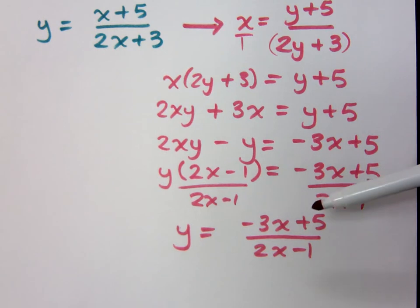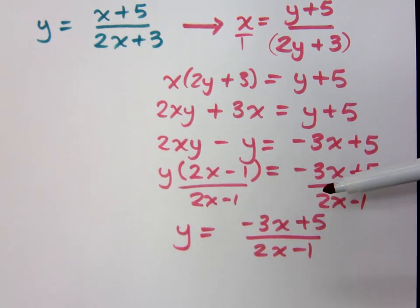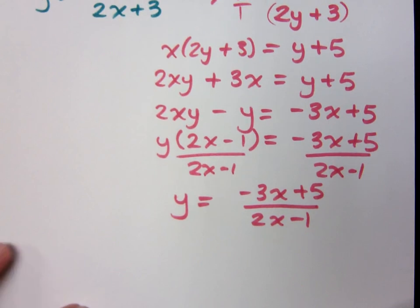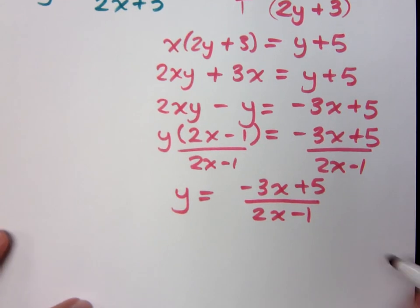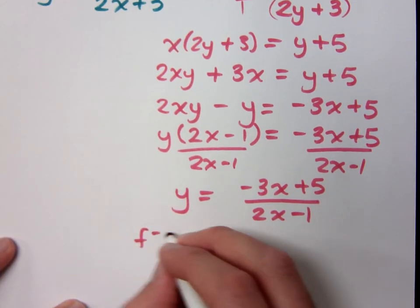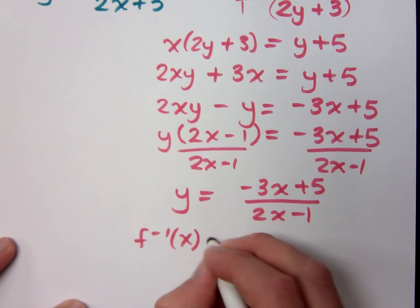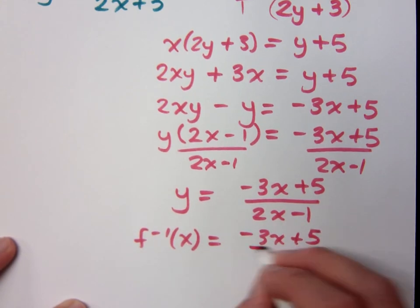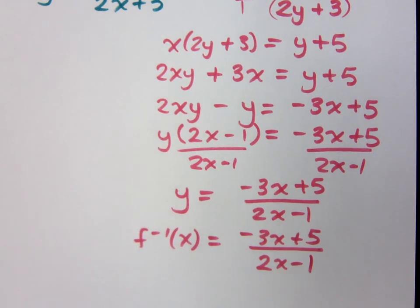I'm in pink right now because I was in the inverse world. To finish, change the y to f inverse of x. So the inverse function is negative 3x plus 5 over 2x minus 1. Is this something you would have just figured out by looking at the order of operations? Probably not.